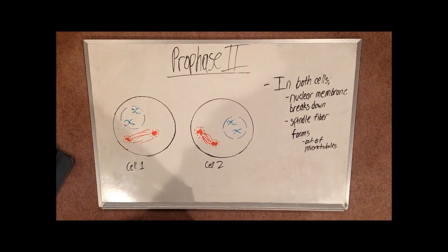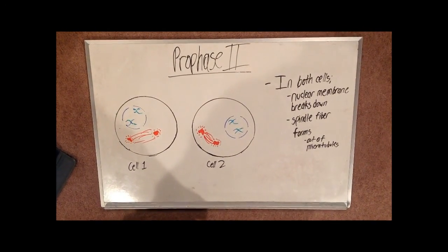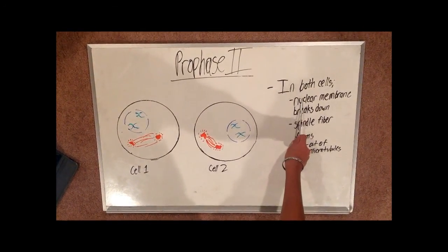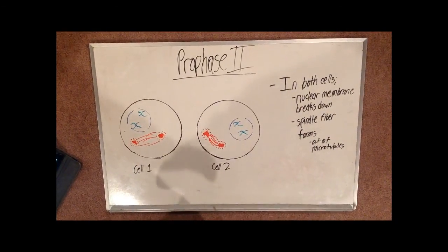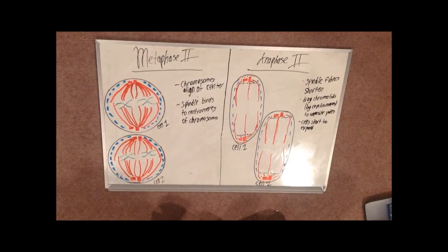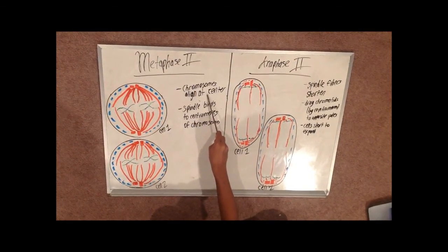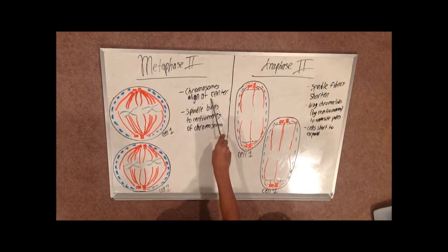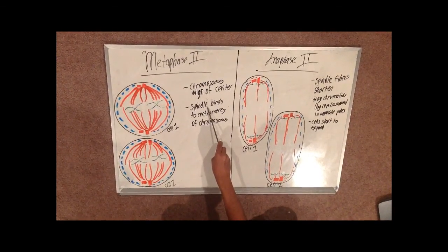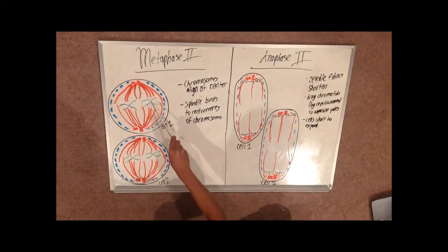In prophase 2, the nuclear envelope breaks down and a new spindle fiber forms. After prophase 2 follows metaphase 2. The chromosomes align at the center of each of the daughter cells. A new spindle forms and it binds to the chromosomes at the center of the cell.